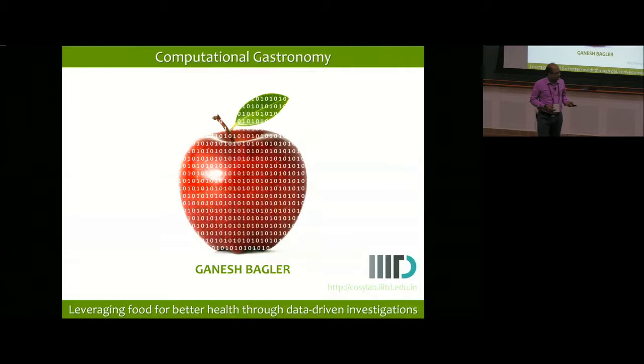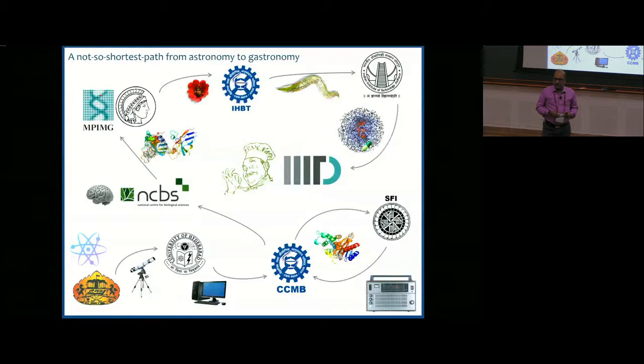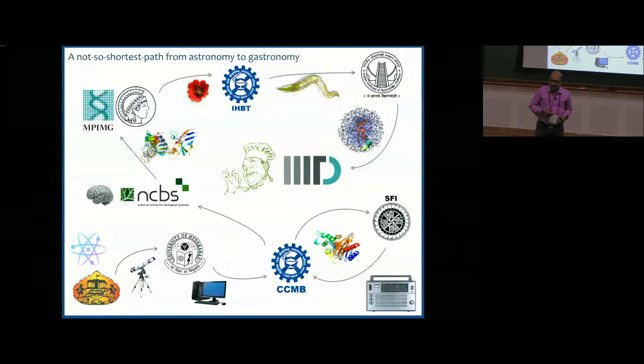I have an identity crisis. I started as a physicist, then moved into computer science, then into computational biology. My PhD thesis supervisor Sumdatta is in the audience—I was at CCMB, worked in computational biology, modeled protein structures using a graph theoretical paradigm, then disease modeling, then brain network modeling at NCBS, and all the way up to IIIT Delhi.